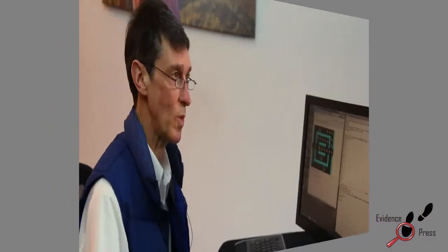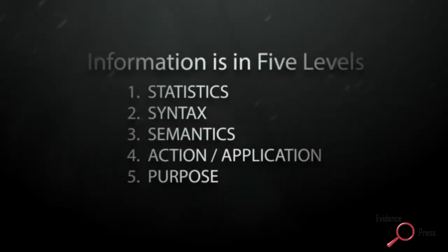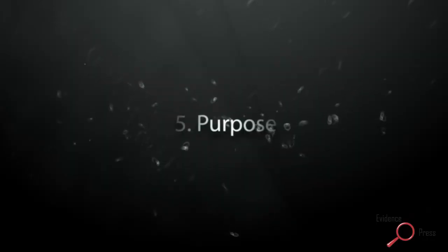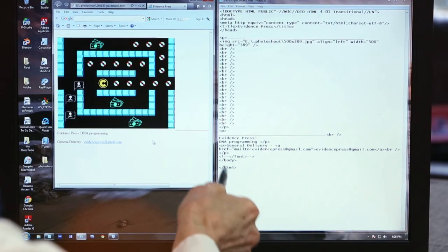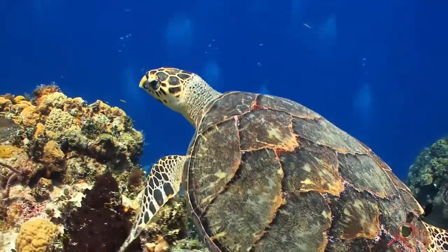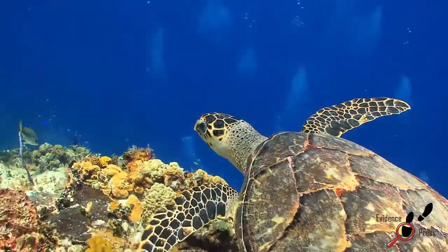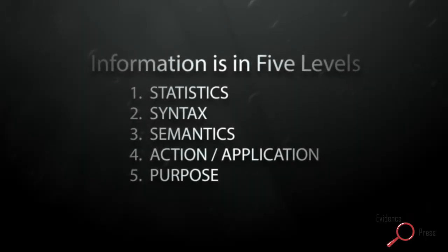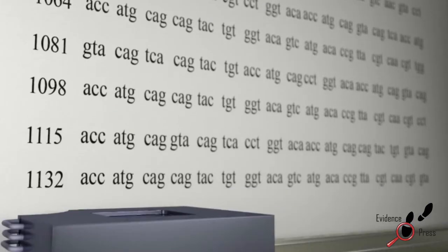Whenever we have information, it appears in five levels. The fifth level is purpose. The purpose of the simple script I've written is to display an image on the left-hand side of the browser. The purpose of the DNA message is to produce life — life cannot exist or reproduce without DNA. All five levels of information are clearly seen in DNA. Yes, DNA is a code, it is a messaging system, and DNA was designed.